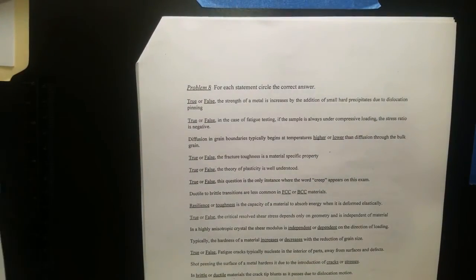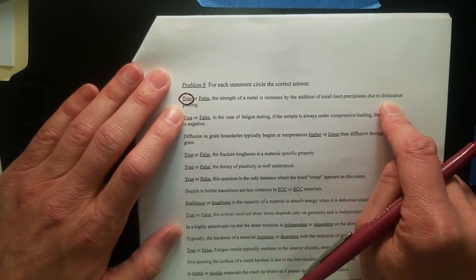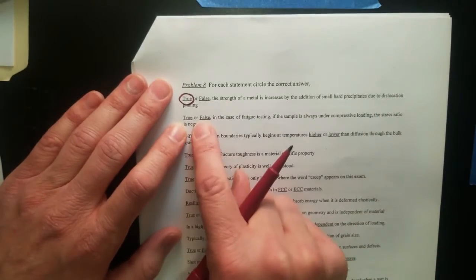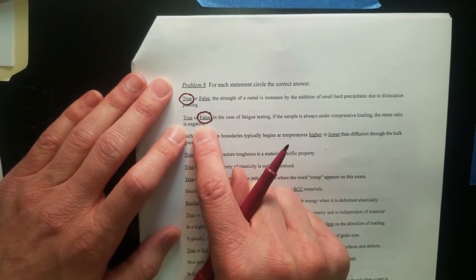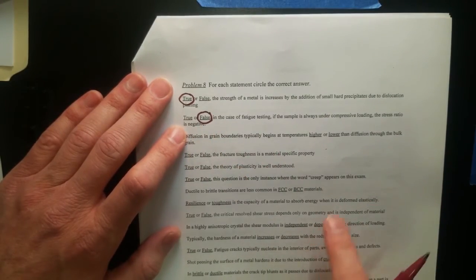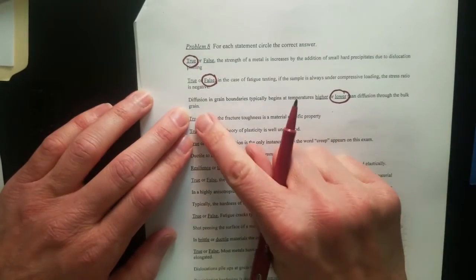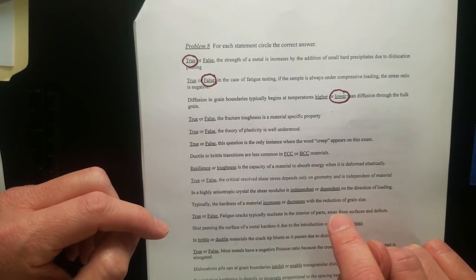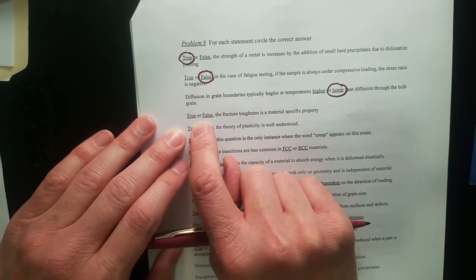Now lastly we have the true-false statements. True. The strength of the material is increased by the addition of small hard precipitates due to dislocation pinning. There's also dislocation bowing, but dislocation pinning is one strengthening mechanism. False. In the case of fatigue testing, if the sample is always under compressive loading, the stress ratio is negative. Well, if it's always under compressive, then the top and the bottom are both negative, giving you a positive stress ratio. Diffusion in grain boundaries typically begins at temperatures that are lower than diffusion through the bulk grains. That's because in the grain boundaries, we've got bigger holes, which means the activation energy for hopping is lower.